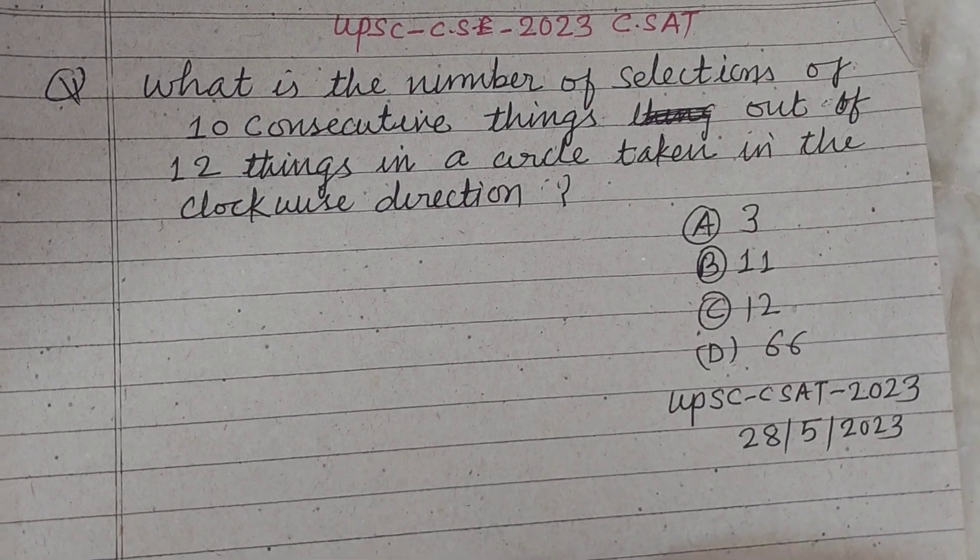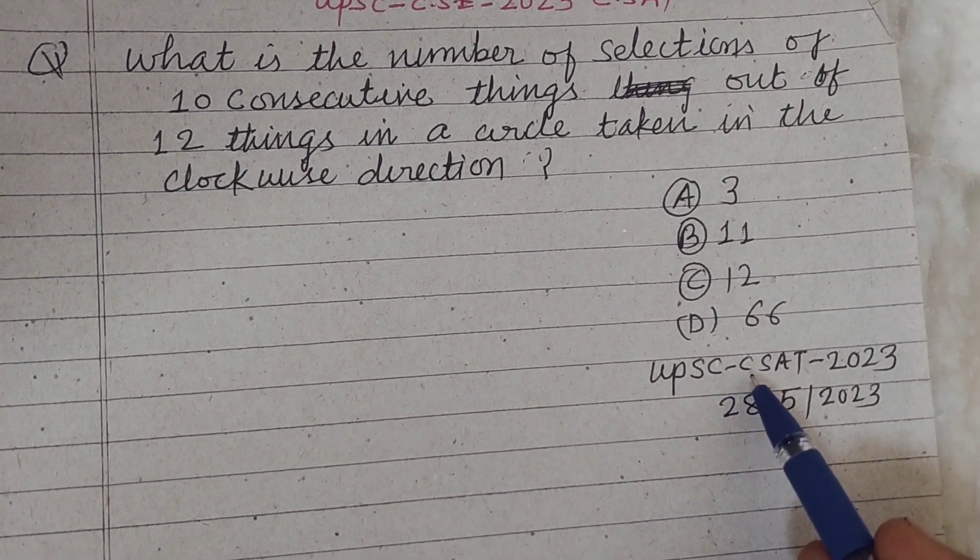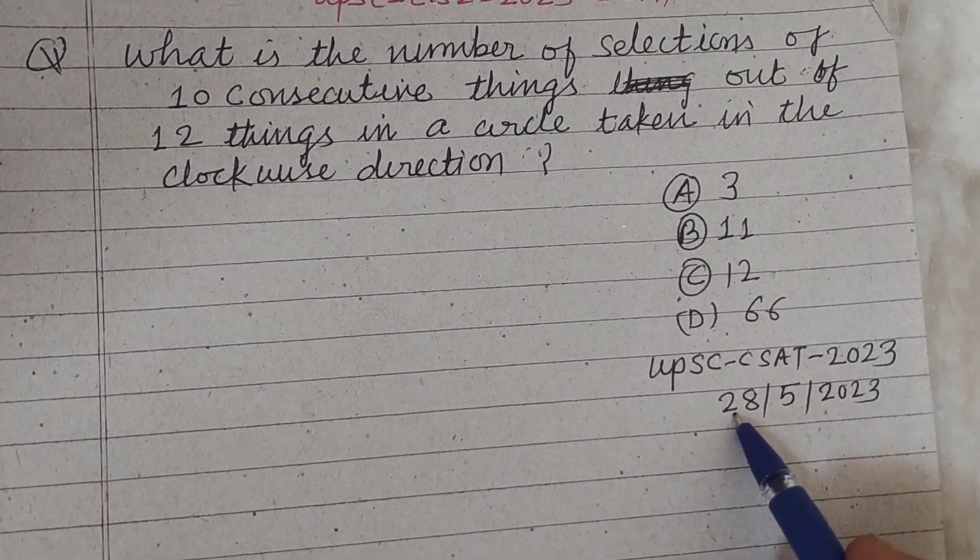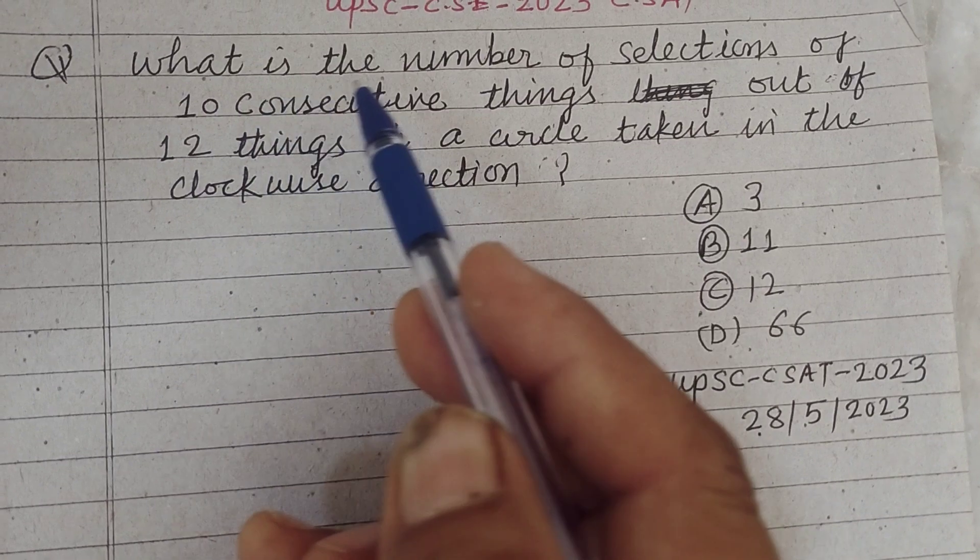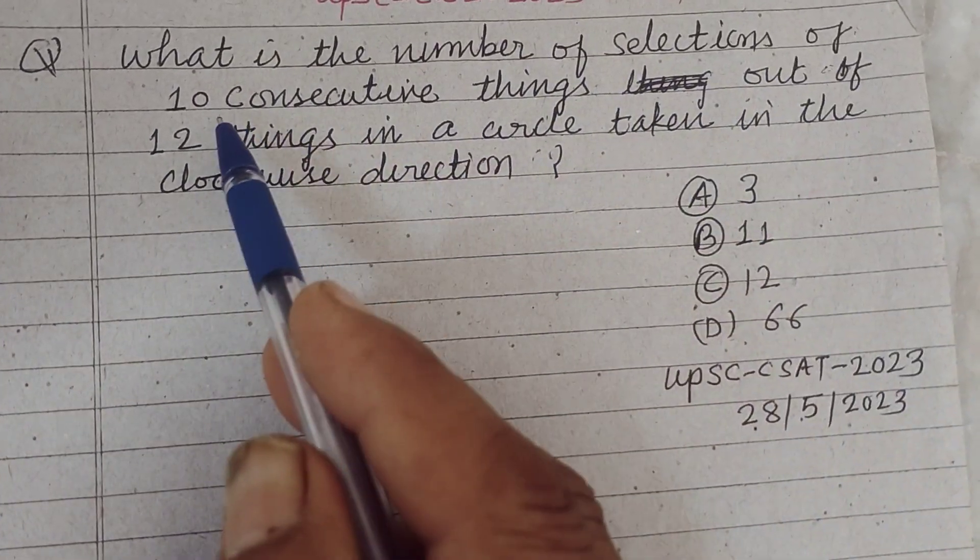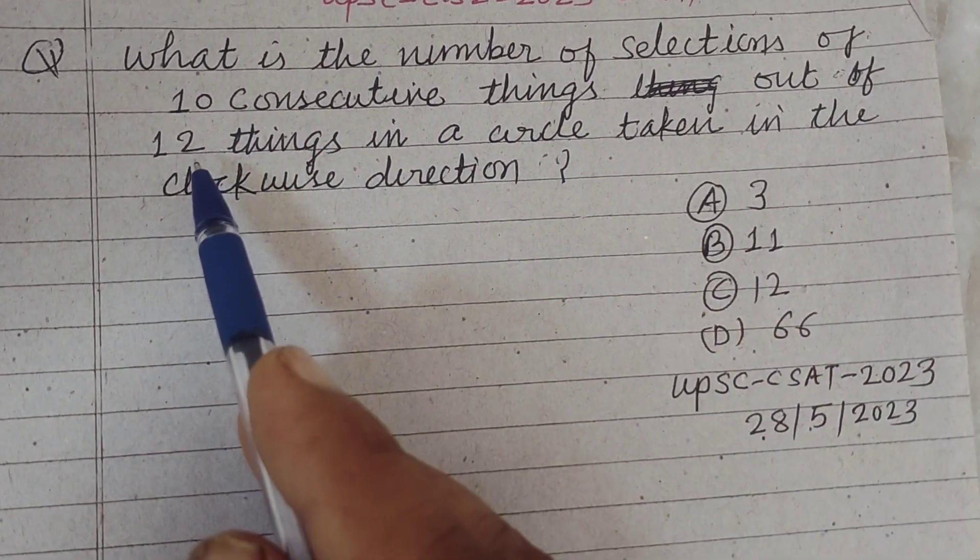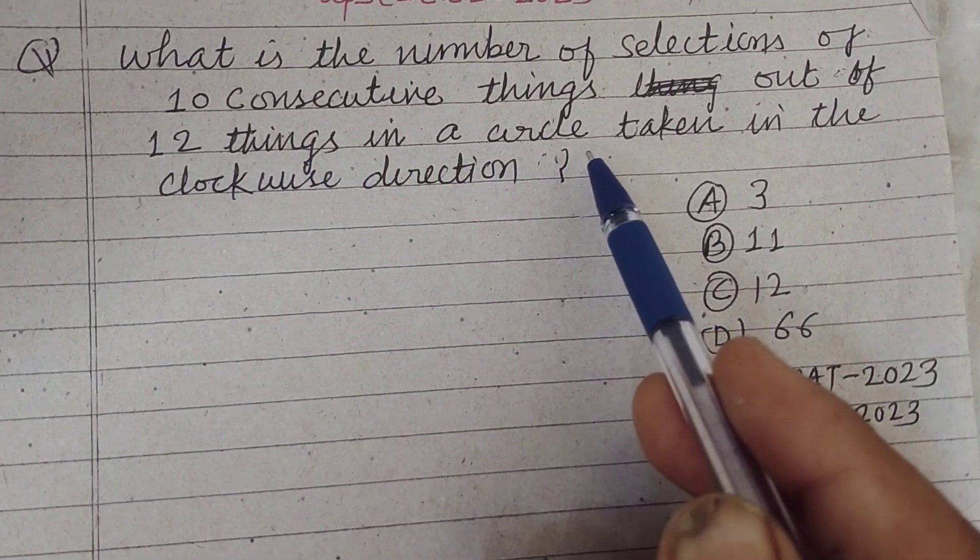Hello viewers, warm welcome to this YouTube channel. UPSC CZ 2023 held on 28 May 2023. The question is: what is the number of selections of 10 consecutive things out of 12 things in a circle taken in the clockwise direction?